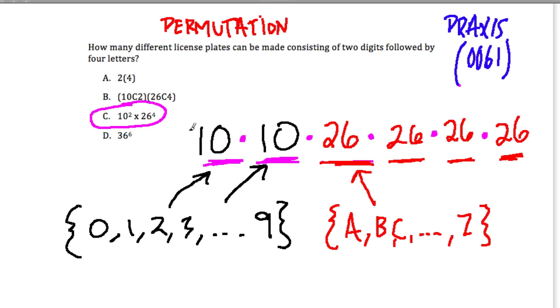Ten squared, because here we have the two tens, ten squared. And here we have 26 to the fourth power. We're multiplying those, and that will give us the total number of combinations that we can have on these license plates.